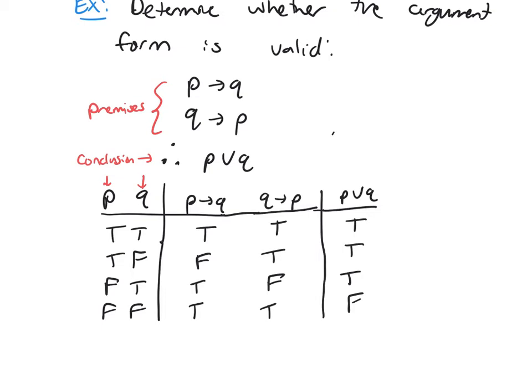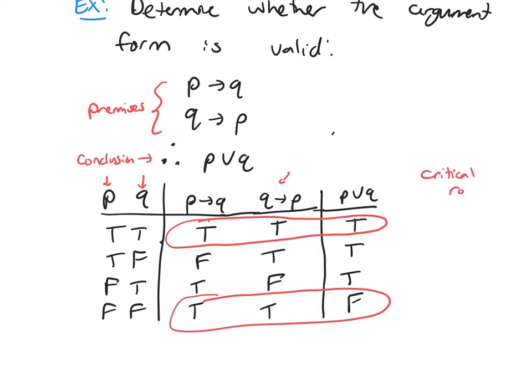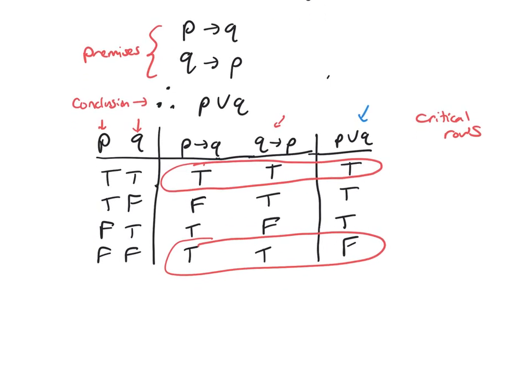And remember you have critical rows. Your critical rows are where your premises are all true. So you're going to look at this middle part here, where I have my premises. Where are they both true? They're both true in the first row and in the last row. So remember these are called critical rows, the rows that we've circled. And you look at your conclusion in those critical rows. If you notice this last critical row, the conclusion is false. And so because of that, we know that this argument is invalid.